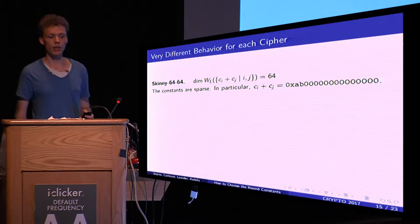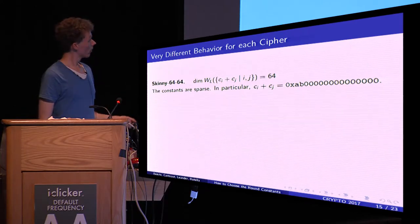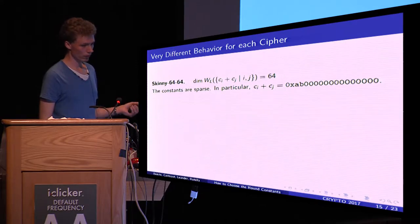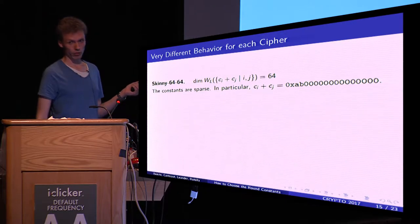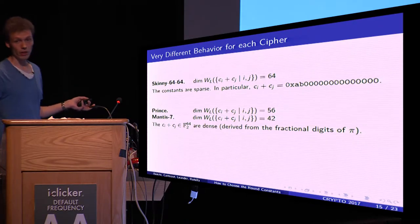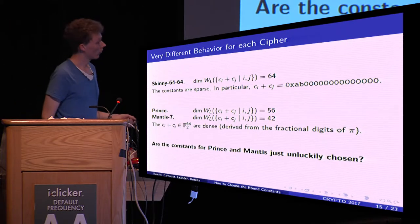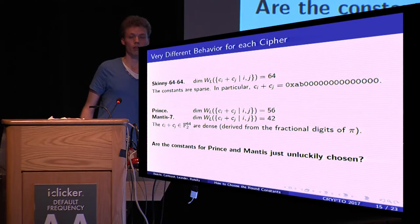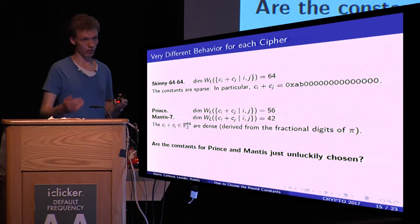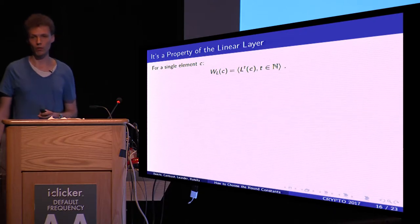We can observe very different behavior across ciphers. For SKINNY, the round constants are very sparse—non-zero only at the first two nibbles—yet the dimension is full at 64. For PRINCE and Mantis, constants look random (derived from fractional digits of pi), yet the dimension of the L-invariant subspace is quite low. This raises the question: are the constants unluckily chosen, or is there an inherent property of the linear layer causing this low dimension? In fact, it is a property of the linear layer itself.